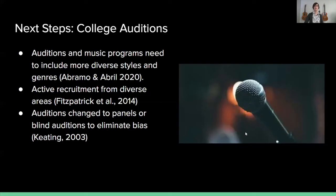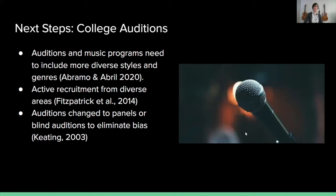Now I'd like to speak about implications and next steps for eliminating marginalization in college music programs. First, universities need to reevaluate the audition system — they need to include more diverse styles and different genres, allowing a wider variety of students access to their university program. Universities need to actively go out and recruit students from diverse areas, specifically targeting students from lower socioeconomic backgrounds. Finally, the way auditions occur may need to change — panels or other blind auditions may need to occur to help eliminate biases that may happen when students are auditioning.